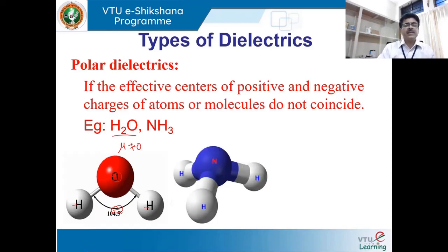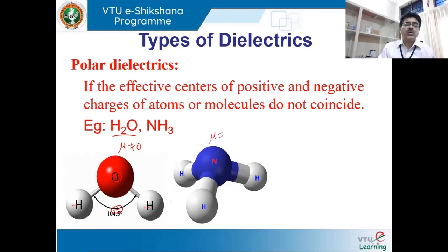Consider ammonia: nitrogen is bonded with three hydrogen atoms. The effective centers of positive and negative charges do not overlap, so the net dipole moment is not equal to zero, and ammonia is a polar dielectric.